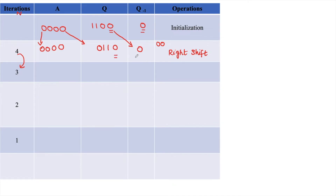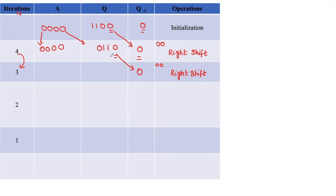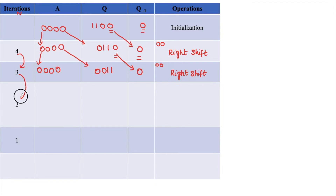We perform the arithmetic right shift again. Q0 will be pushed to Q minus 1. We write the 3 bits as such, bring A0 and write it in the first Q position, retain remaining 3 bits of A as such, and copy the sign bit. We reduce N by 1; now N equals 2. It is not 0, so we continue the algorithm.